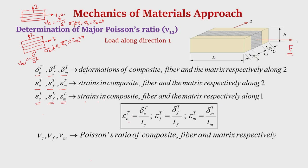The strains in the transverse direction are defined as change in length per unit length. Along direction 2, for the composite it is delta_CT divided by the initial length along 2, T_C. Similarly, epsilon_FT is delta_FT divided by the initial length of the fiber along 2, and the transverse strain for the matrix is delta_MT divided by T_M.